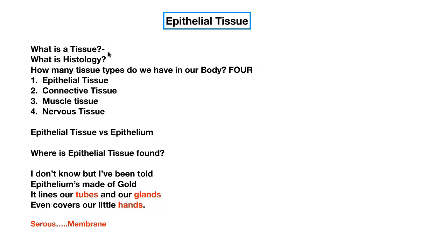How many tissue types do we have in our body? We have billions of cells but we only have four tissue types. The one we're covering today is epithelial tissue. Next class period we'll be covering connective tissue. When we get to the muscular system we'll do muscle tissue, and when we get to the nervous system, nervous tissue.